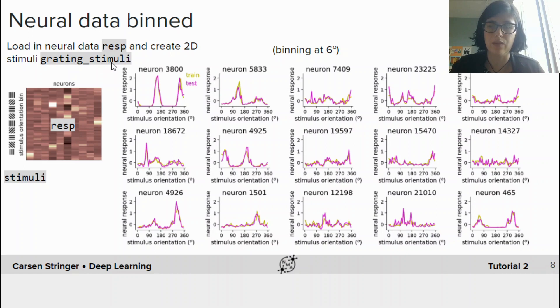We're going to use the same data we used in tutorial one, but we're going to bin the data a bit more in six-degree bins, and we're also going to split the data into train and test and create these average tuning curves on separate halves of the data.